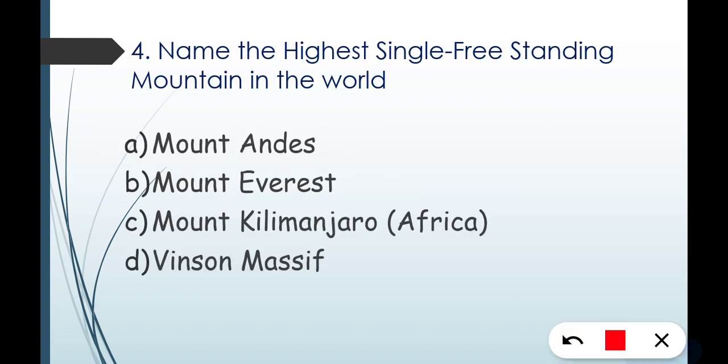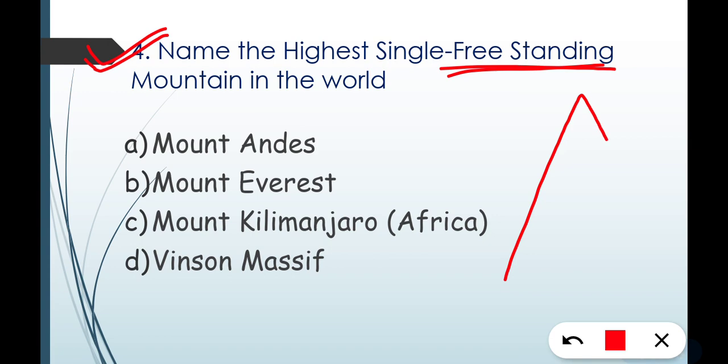Question number four: name the highest single freestanding mountain in the world. Highest single freestanding — meaning which mountain stands alone and is very tall. Options are Mount Andes, Mount Everest, Mount Kilimanjaro, and Vinson Massif.